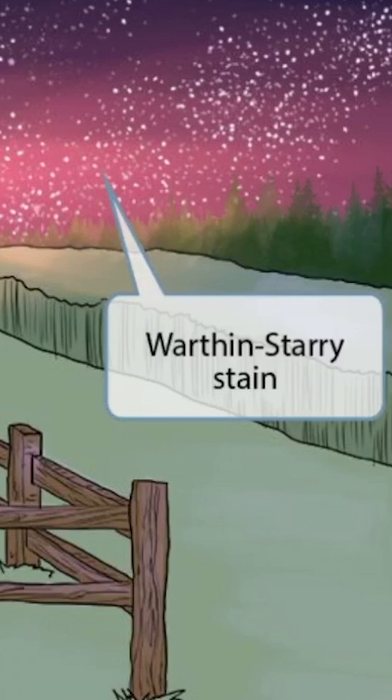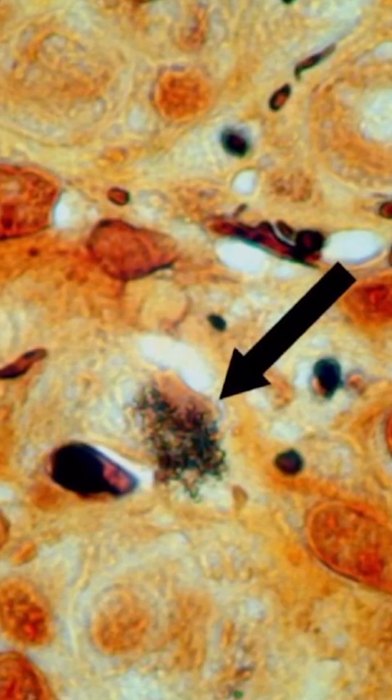In addition to the pink sky, notice that we've made it appear as if it's night and the sky is filled with stars. The starry sky is to help you remember that Bartonella can also be identified using the Warthin-Starry stain. This is a Warthin-Starry stain — it's a silver-based staining method and can be used to identify Bartonella.